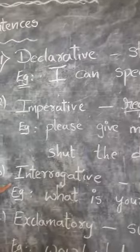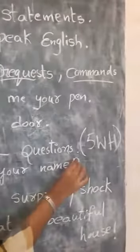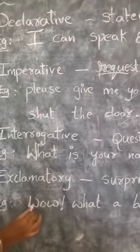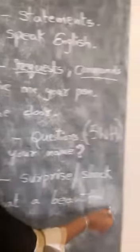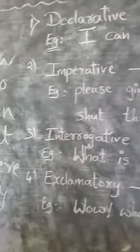But when you come to interrogative sentence, they start with a capital letter and they end with question mark. And when you come to exclamatory sentence, they start with a capital letter and they end with exclamatory mark. So these are the types of sentences that you usually find in English language.